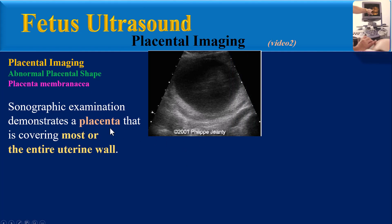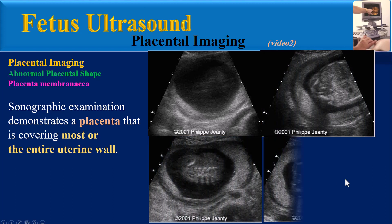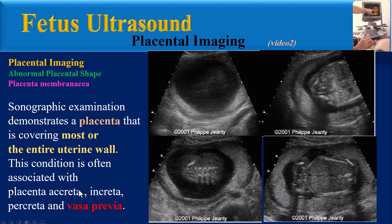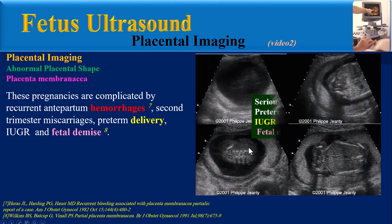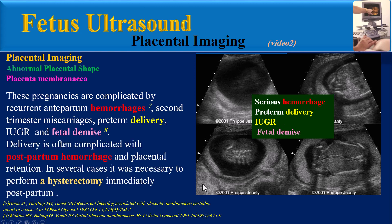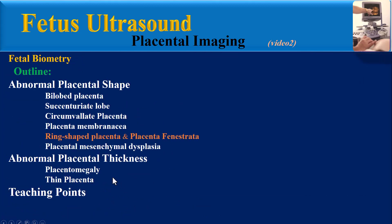With placenta membranacea, all or nearly all of the membranes are covered with villi. Sonographic examination demonstrates a placenta covering most or the entire uterine wall. Images from the fetus.net website show placenta membranacea at the first trimester, early second trimester, late second trimester, and third trimester. This condition is often associated with placenta accreta, increta, or percreta and vasa previa. These pregnancies are complicated by recurrent antepartum hemorrhage, second-trimester miscarriage, preterm delivery, fetal growth restriction, and fetal demise. Delivery is often complicated by postpartum hemorrhage and placental retention; in several cases hysterectomy was necessary immediately postpartum.